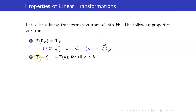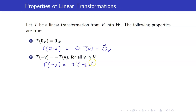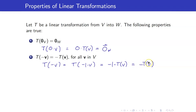Second, T of negative V is equal to negative T of V. This is true because negative V can be written as negative 1 times V. This is a property of vector spaces. And now we can pull out negative 1. Hence, this is now your negative T of V.